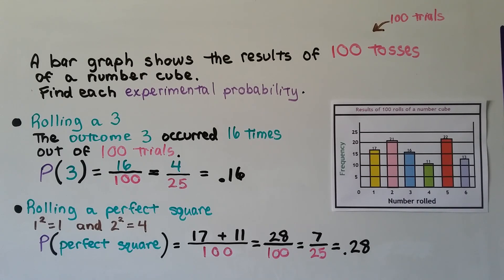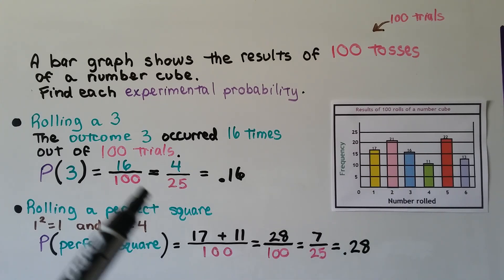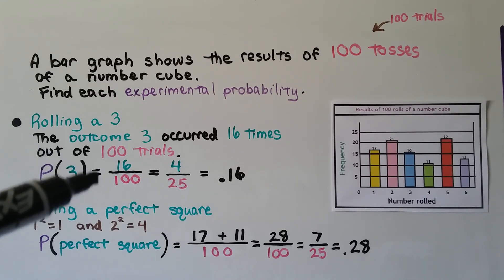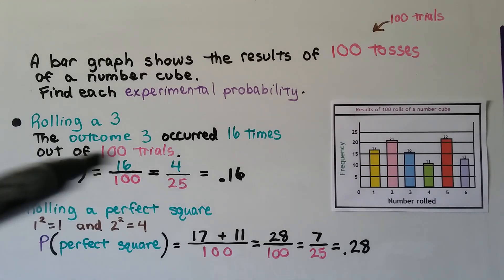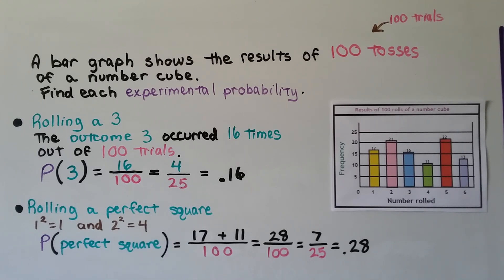What's the experimental probability of rolling a 3? The outcome 3 occurred 16 times out of 100 trials. The probability of 3 is equal to 16 one-hundredths, which we can reduce to 4 twenty-fifths, or 0.16 as a decimal.